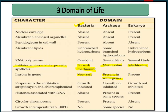Next: introns — introns are present in Eukaryotes. Next character: response to antibiotics streptomycin and chloramphenicol. True bacteria will be inhibited by these antibiotics. Archaebacteria will not be inhibited. Eukaryotes will also not be affected by these antibiotics.